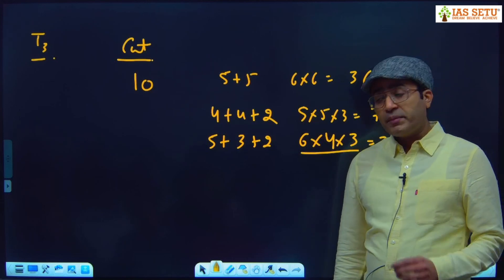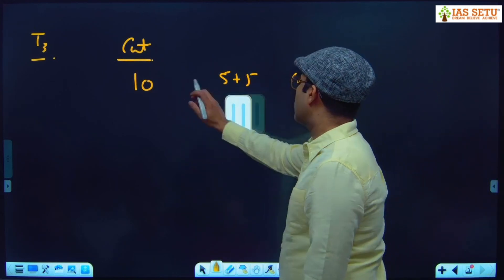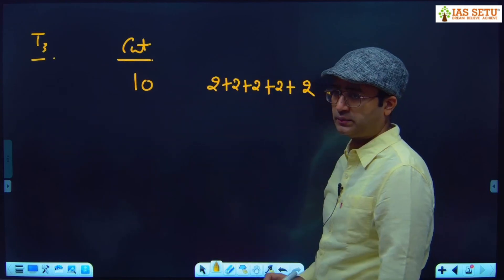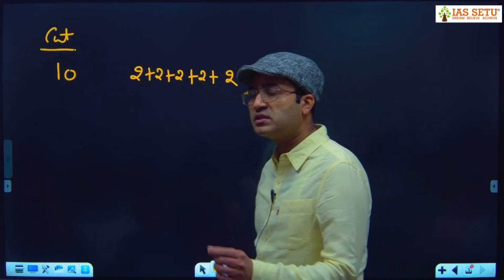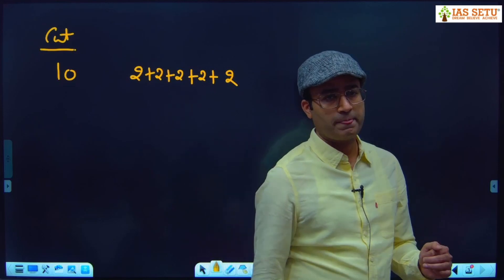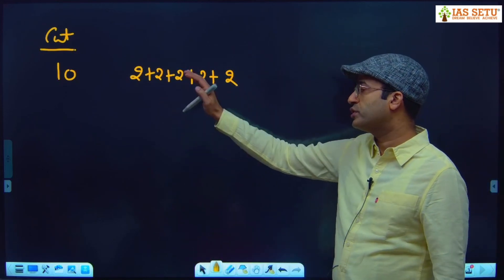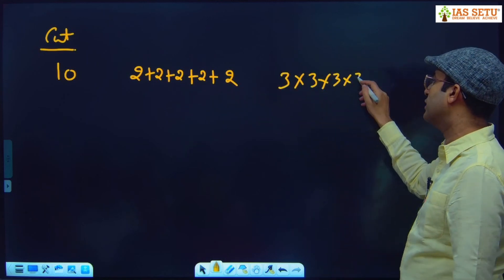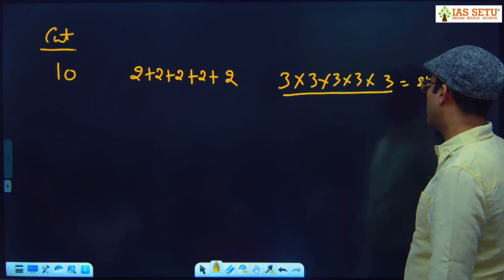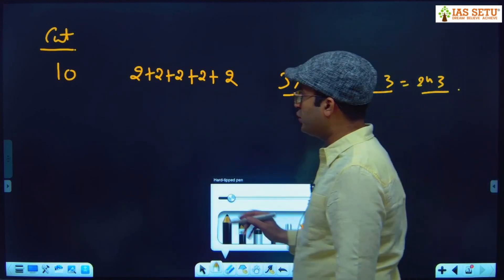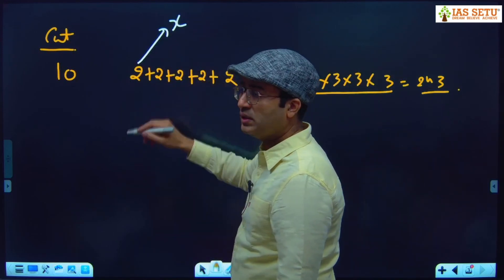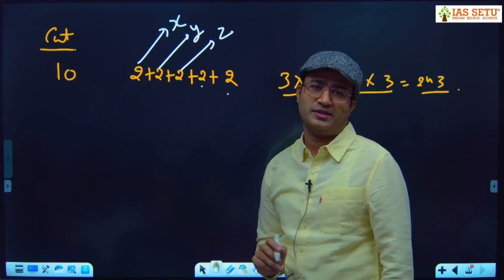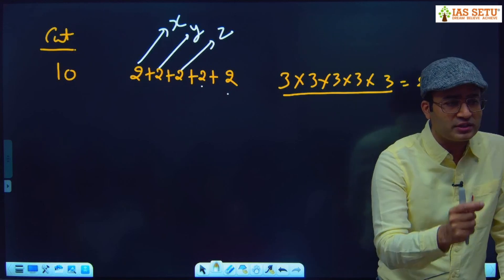Some distributed as 2 + 2 + 2 + 2 + 2, getting 3 × 3 × 3 × 3 × 3 = 3⁵ = 243. But the question is: where do you make this extra 2+2 cuts? We only have 3 axes — x, y, z. If you are using more than 3 axes, conceptually it is wrong.